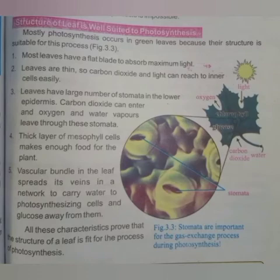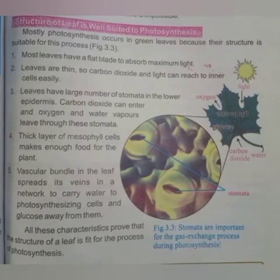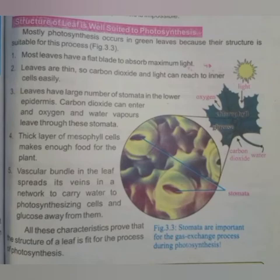Point number four: a thick layer of mesophyll cells makes enough food for the plant. Mesophyll is a part of the leaf and it is present between the upper and lower epidermis. Mesophyll کہاں present ہوتے ہیں؟ Upper and lower layers کے درمیان، اور ان کے اندر photosynthesis کا process ہوتا ہے۔ Mesophyll cells کی layer thick یعنی موٹی ہوتی ہے اور اس کی وجہ سے plant یہاں photosynthesis کے ذریعے اپنا food prepare کرتا ہے۔ Leaves پتلے ہوتے ہیں لیکن ان کے اندر mesophyll layer بہت thick ہوتی ہے۔